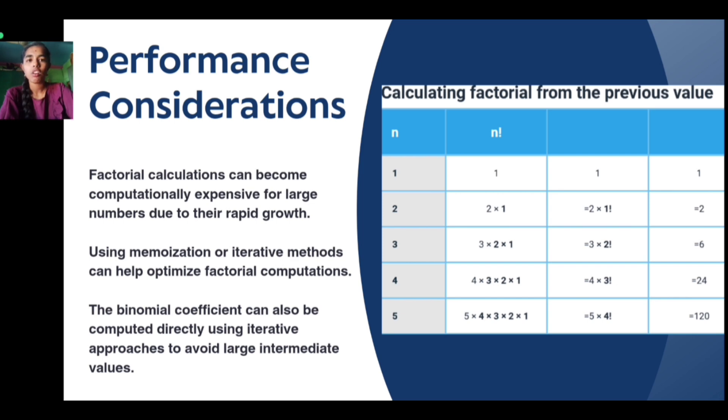Using memoization or iterative methods can help optimize factorial computations. Binomial coefficients can also be computed directly using iterative approaches to avoid large intermediate values.